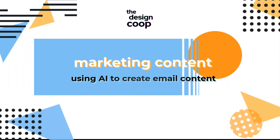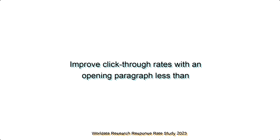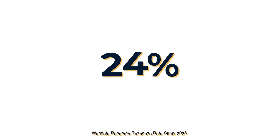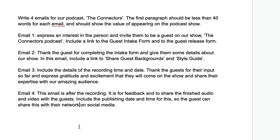So you want to create some email copy using ChatGPT or other AI programs. Something that you're going to have to focus on is that first paragraph. Data from 2023 shows that if your first paragraph is less than 40 words, there's a click-through rate of about 24%, which means that they're clicking and going on to your website or looking at your services and products. Here are four prompts that I'm going to put into ChatGPT to create a first draft of these emails.